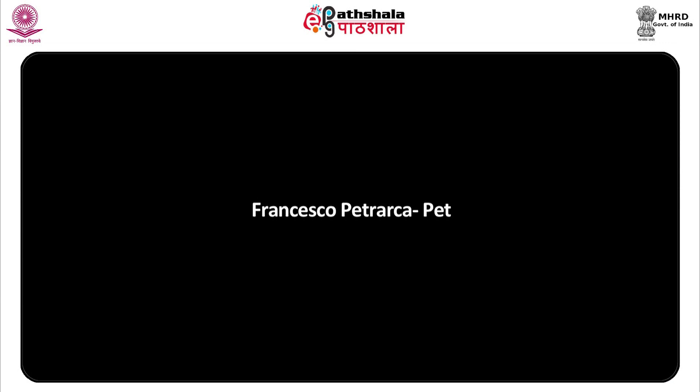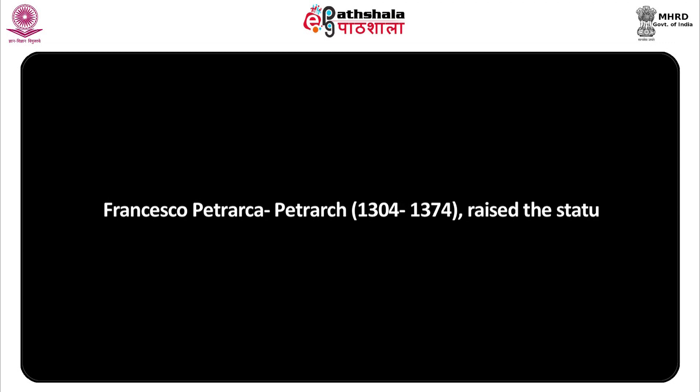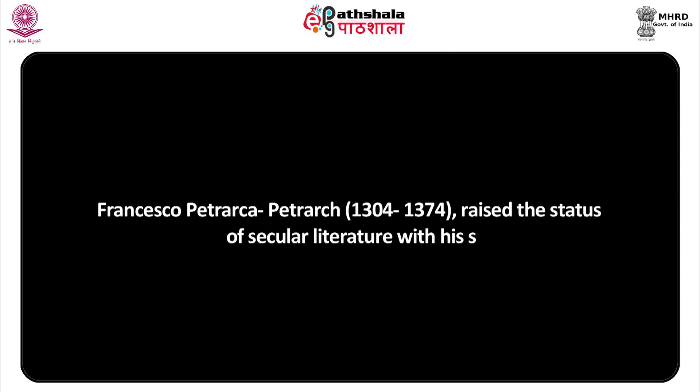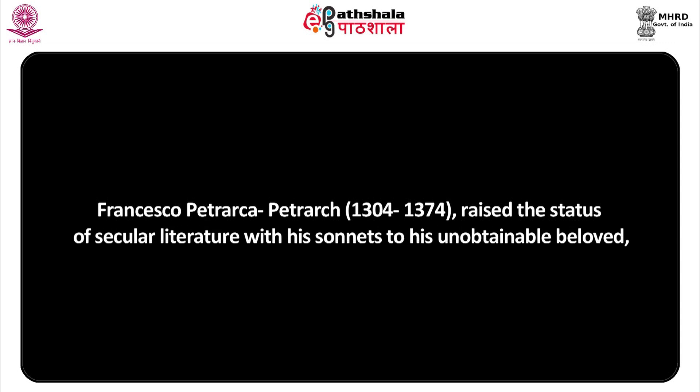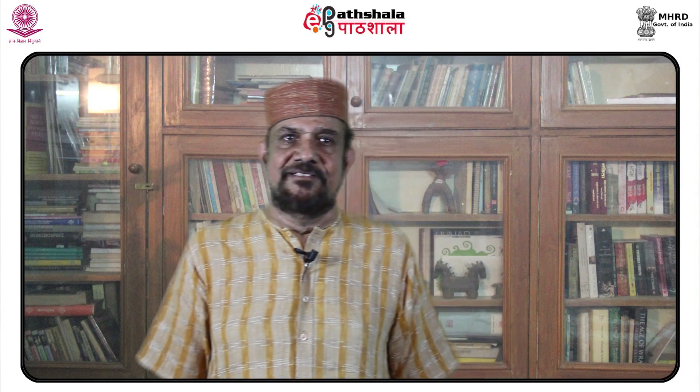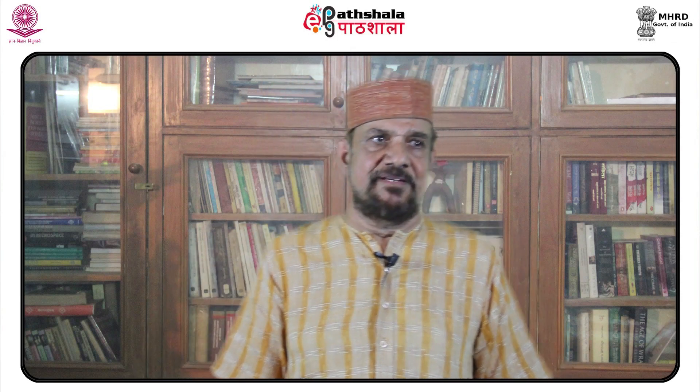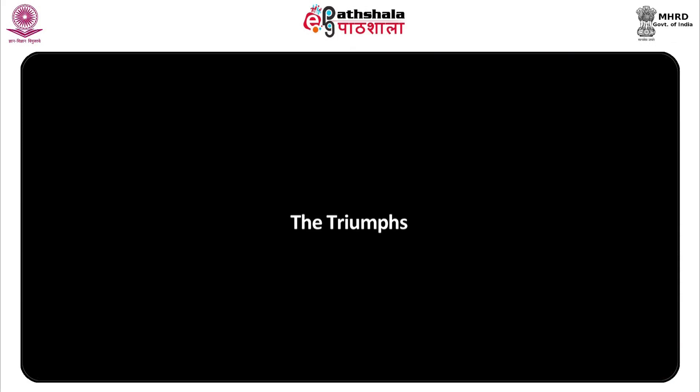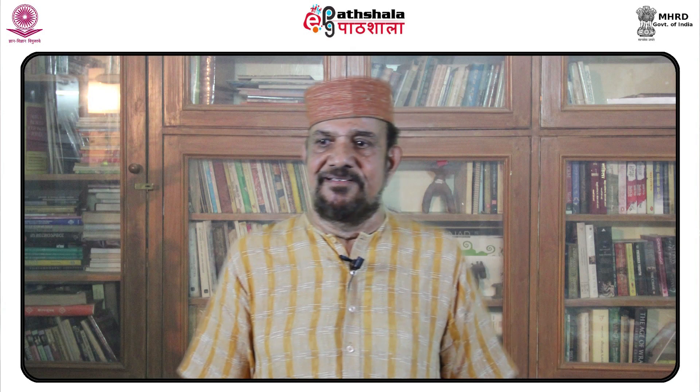Francesco Petrarch (1304–1374) raised the status of secular literature with his sonnets to his unobtainable beloved Laura, his histories and biographies, and his writings on the joys of country life in the Roman manner. Petrarch's imaginative updating of classical themes in a work called Triumphs examines the themes of chastity triumphant over love, truth over chastity, fame over death, time over fame, and eternity over time — providing later Renaissance poets and painters with a wealth of allegorical subject matter.